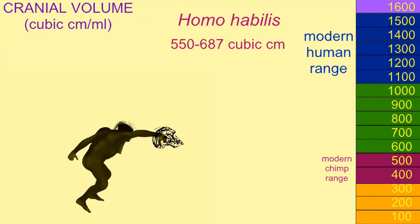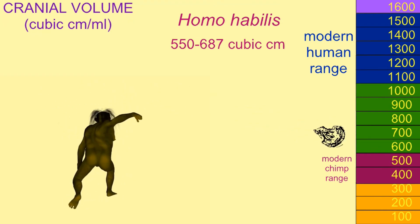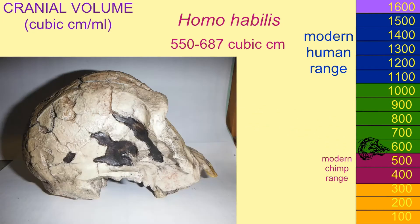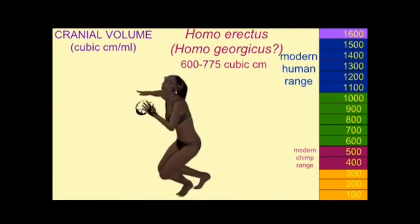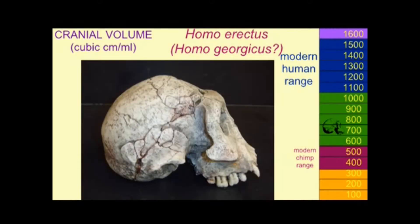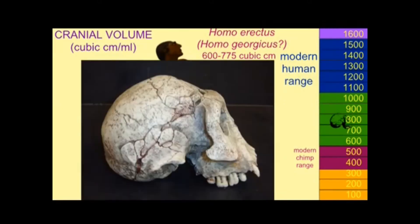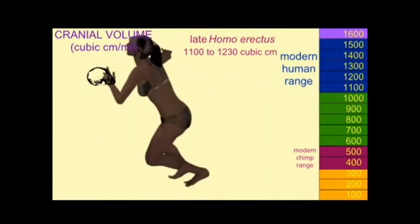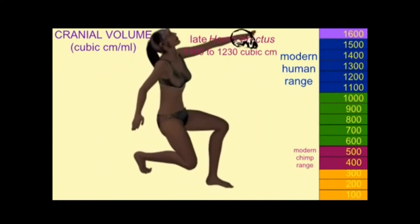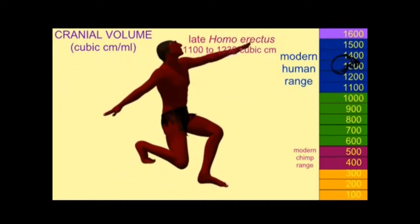Homo habilis, the earliest member of the genus Homo, had a cranial volume which was above chimp range. The earliest specimens of Homo erectus had a cranial volume which was even greater. Later members of Homo erectus had larger cranial volumes, some even within modern human range.